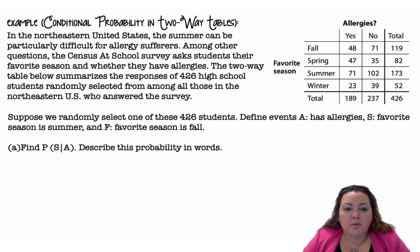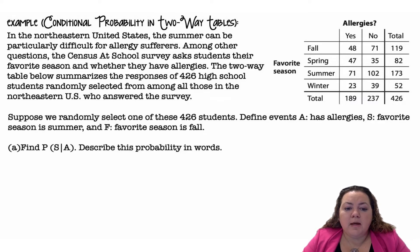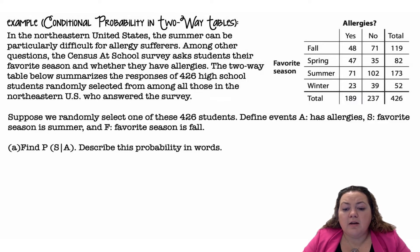Conditional probability in two-way tables: we have favorite season and allergies. In the northeastern United States, summer can be particularly difficult for allergy sufferers. The census at school survey asked students their favorite season and whether they have allergies. The two-way table summarizes responses of 426 high school students randomly selected from the northeastern U.S. Define event A as has allergies, S as favorite season is summer, and F as favorite season is fall.